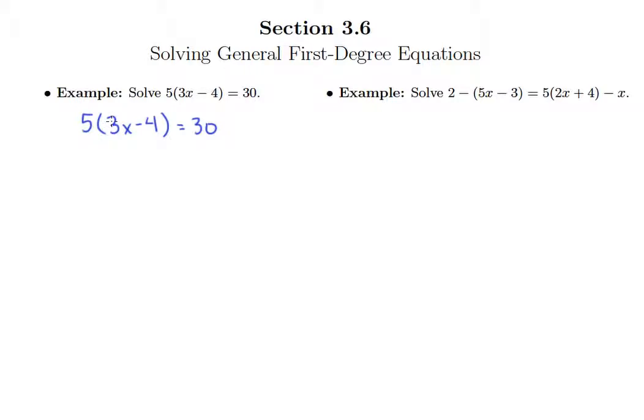You can't really combine your like terms until any distribution that is there is completed. So we need to distribute 5 through to both of these terms.